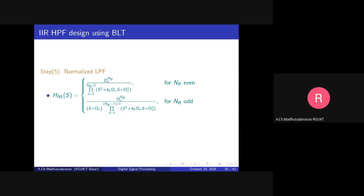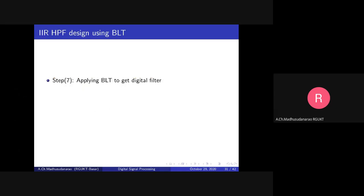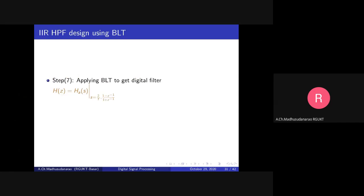Once we have the normalized low pass filter, we will convert it to our required high pass filter. The normalized low pass to high pass filter conversion is done using the expression: capital S equals omega_p' divided by small s — that is, replace s with omega_p' / s. After that, we convert to the equivalent digital filter using bilinear transformation. Since T cancels out in the numerator and denominator after substitution, for convenience we can take T equals 2.